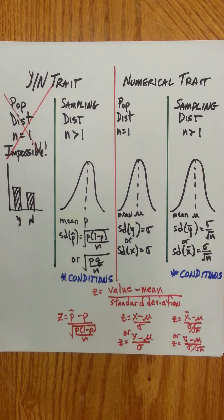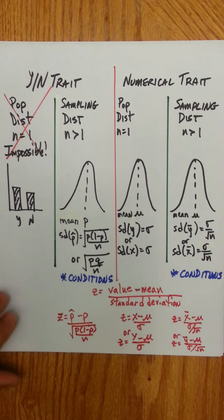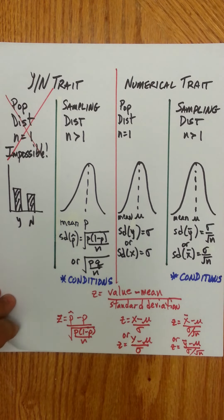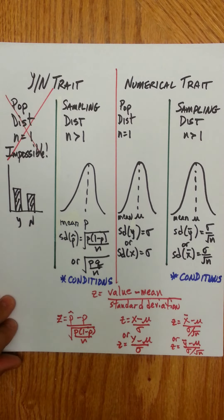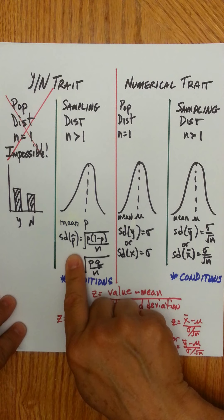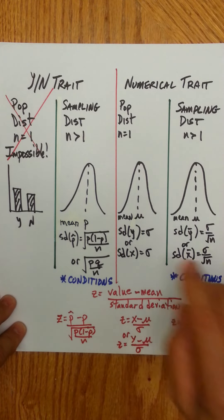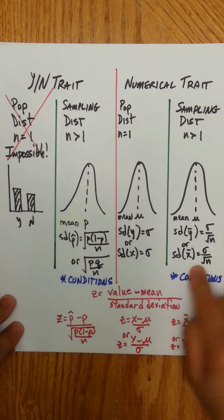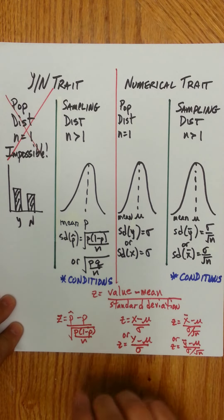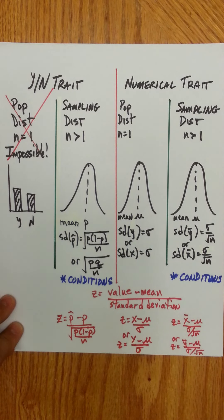When you go to find probabilities outside of the empirical rule — the empirical rule only applies to whole number standard deviations from the mean — you have to use z-score and normal CDF. Any time you see the word probability, like what's the probability of getting a particular sample proportion, a specific height, or a specific sample mean, you always have to first find the z-scores and then take the normal CDF to find the area under the curve.